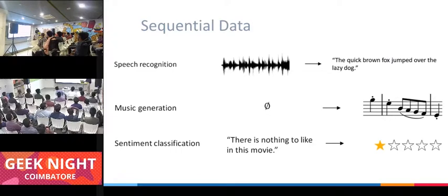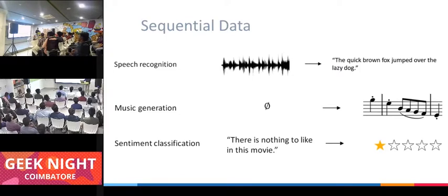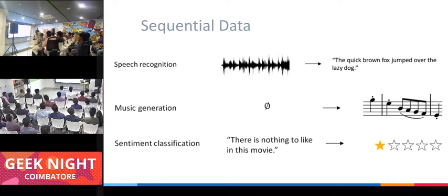For example, if I say 'the movie is beautifully bad,' is it positive or negative? We as humans understand it, but a neural network — a convolutional or NLP-based one — just looks at 'beautiful' and says that's a positive word. But if you look at the sequence 'beautifully bad,' you have that contextual information. From that, an RNN will be able to give a sentiment rating.